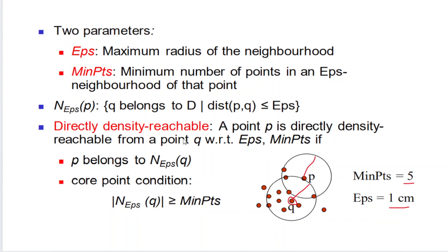What is meant by directly density reachable? We can say a point P is directly density reachable to point Q if: first, P is within the epsilon neighborhood of Q, and second, Q must satisfy the core point condition — meaning the number of points in Q's epsilon neighborhood must be greater than the minimum points. If Q is a core point, then P is directly density reachable to Q.